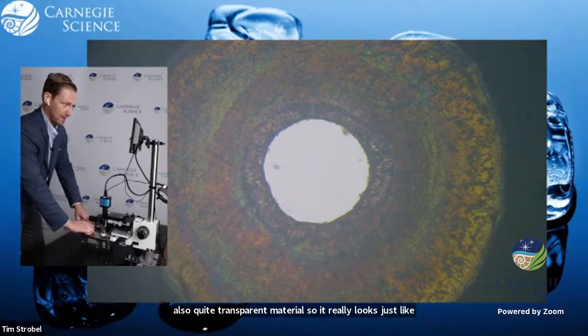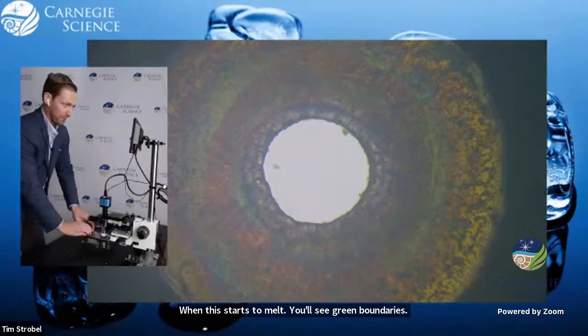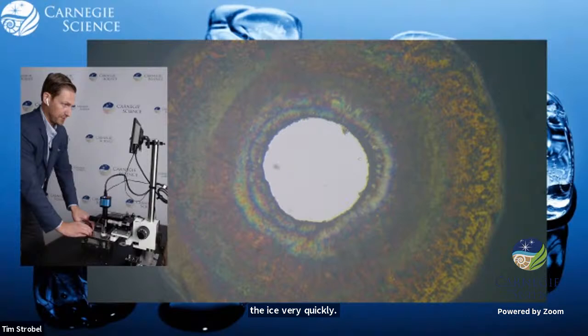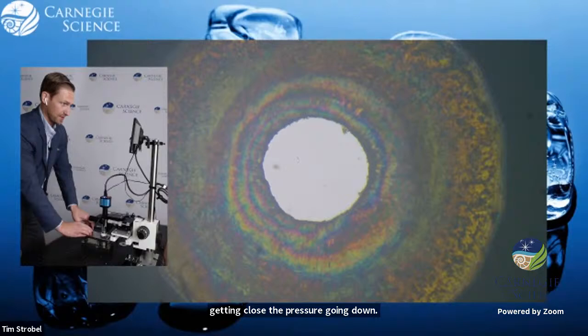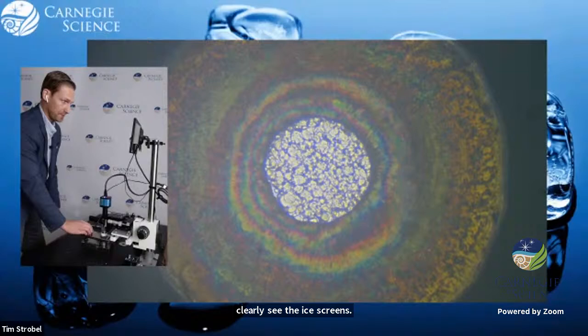So we're actually going to have to overpressurize this beyond the phase boundary. And when I get to that, you're going to see probably a flash on your screen and you're going to see the entire sample. Did you see that? Yeah. That was the entire sample forming ice. Ice is also quite a transparent material, so it really looks just like the liquid. But now, as I release the pressure, when this starts to melt, you'll see grain boundaries.